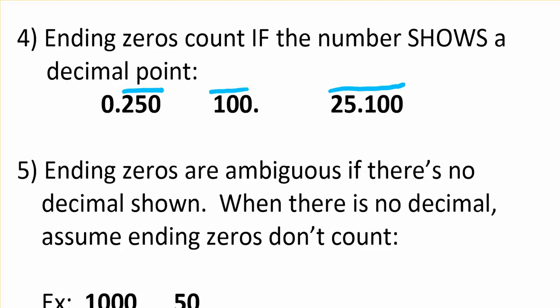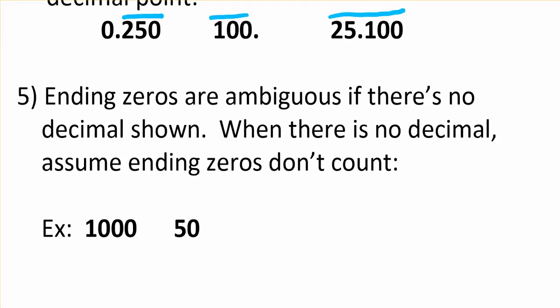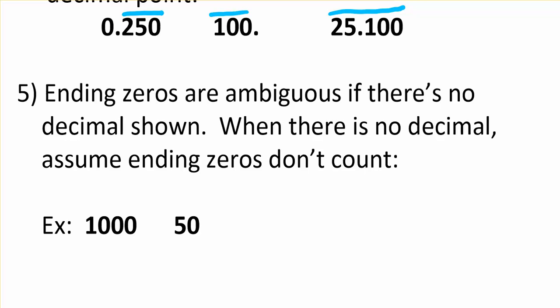If there is an ending zero, or ending zeros, and there's no decimal point shown, technically that's ambiguous, but what we assume is that they don't count. So on each of these, I would have just one significant figure, and that's very different than if there were a dot shown. Now they are all significant.